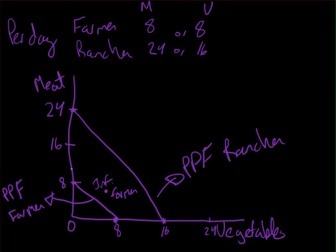Looking at the graph: for meat production, the rancher's PPF intersects the meat axis at a higher point than the farmer's, so the rancher has absolute advantage in producing meat. For vegetables, the rancher's PPF also extends further out on the vegetable axis. Therefore, the rancher can produce more vegetables when not producing any meat than the farmer can, giving the rancher absolute advantage in vegetables as well.